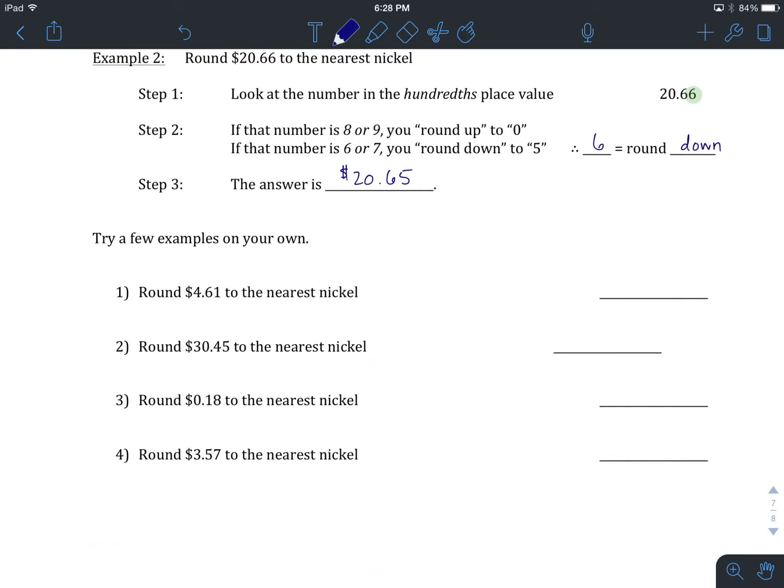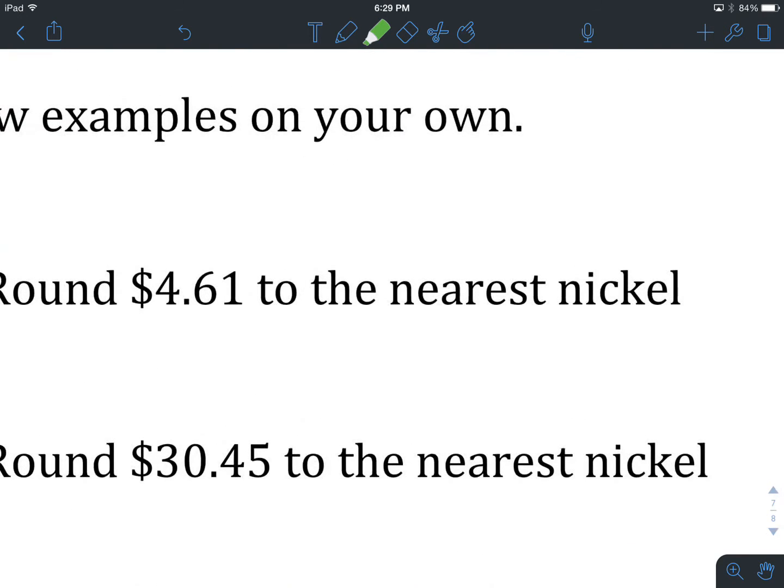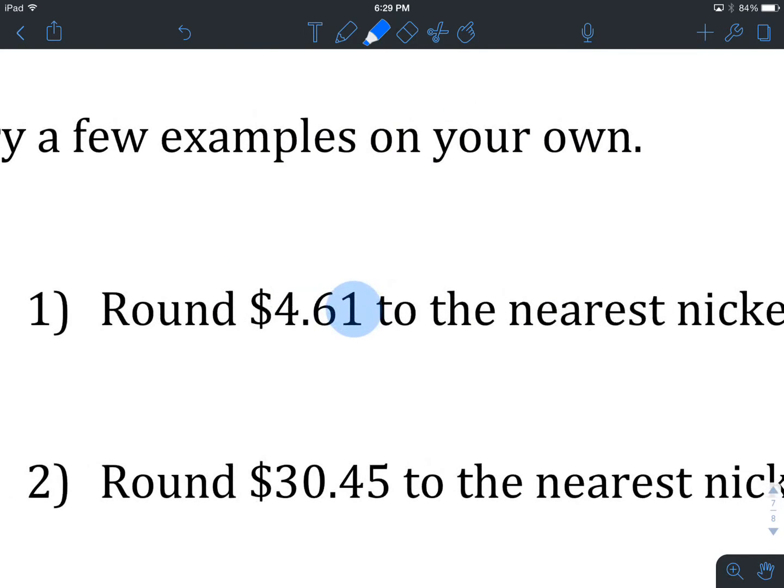Round $4.61 to the nearest nickel. First step, as always, find the place value. So we're looking for hundredths. Here we are in hundredths. There it's a one. If we're looking at this, $4.61 is either going to be rounded to $4.60 down or $4.65 up. The one is closer to zero than it is to five.